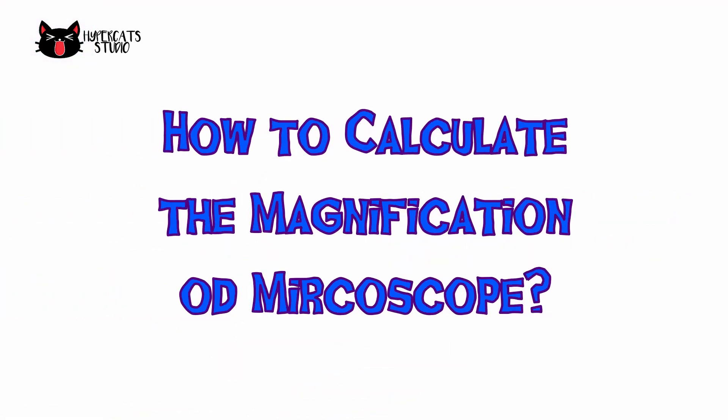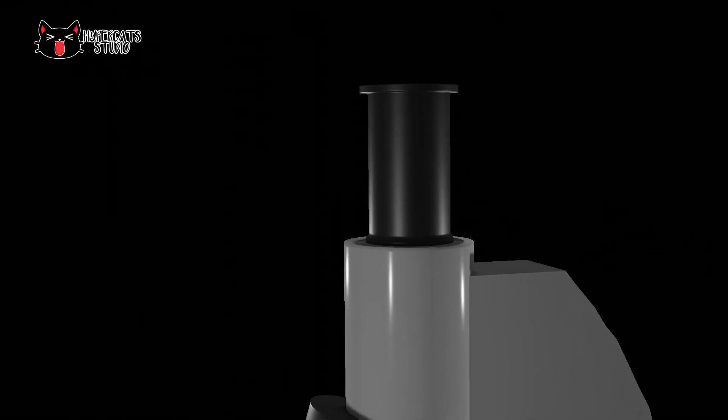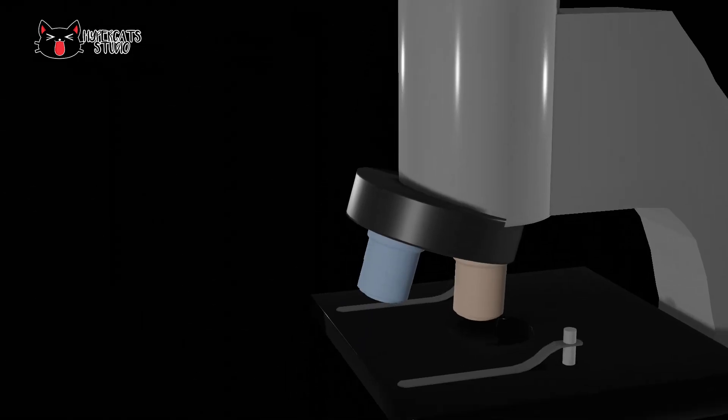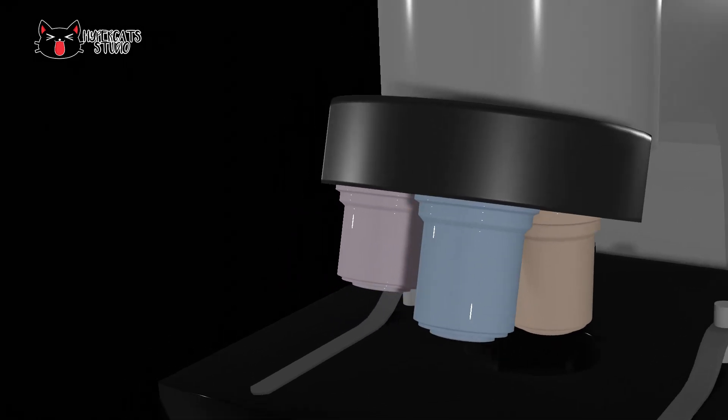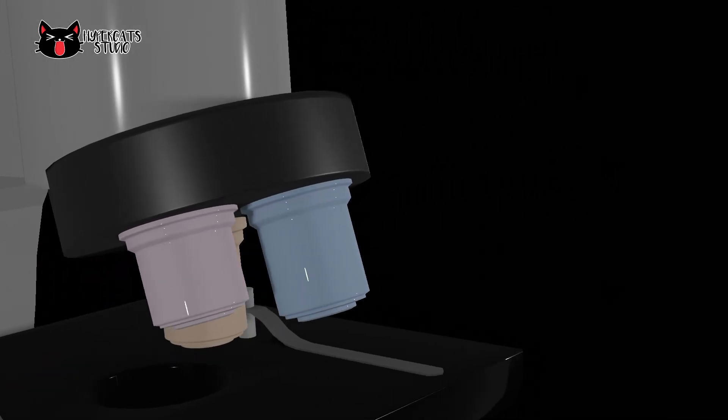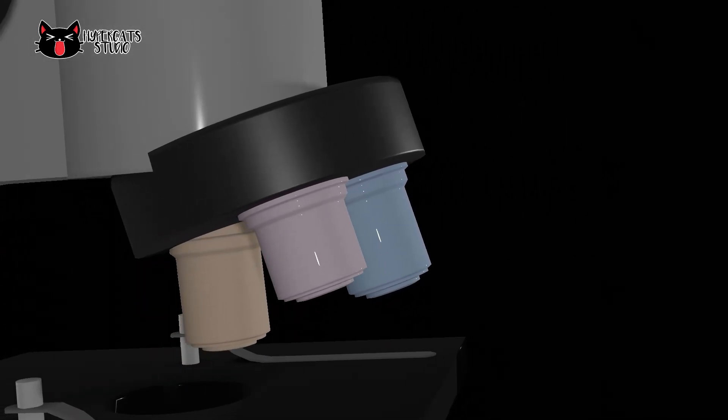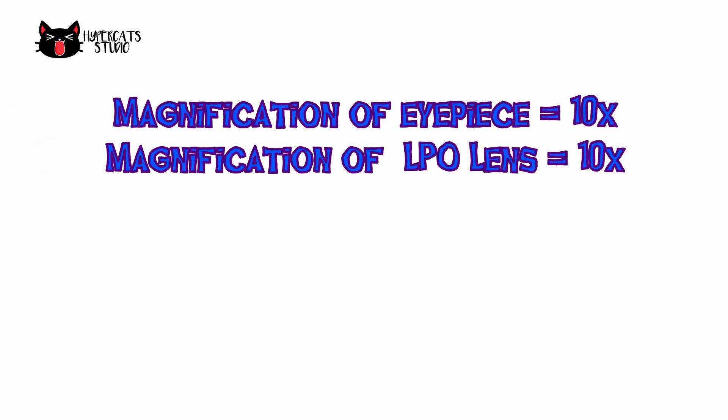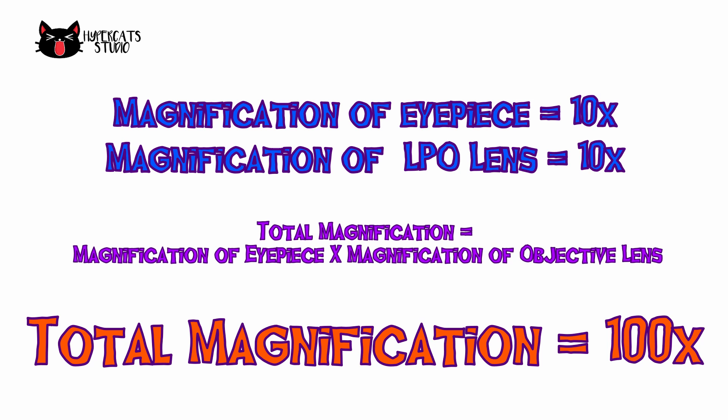A compound microscope uses lenses to magnify a specimen. It has an eyepiece and objective lenses. Every objective lens has its own magnification power. If we use these two together, it can produce a bigger image under the microscope. For example, if we have an eyepiece with 10 times magnification and a low power objective with another magnification power of 10, we can produce an image that is 100 times bigger.